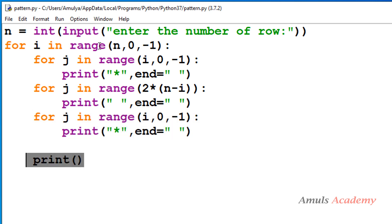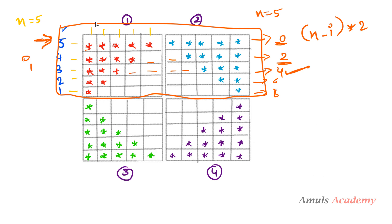After printing one row it goes to the new line. In the first row it prints stars, then no space (0 spaces), then the second set of stars, then moves to next line. In row 4 it prints stars, then spaces, then the next stars. That's why we used three for loops inside the outer row loop — one for pattern 1, one for spaces, and one for pattern 2.